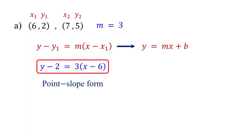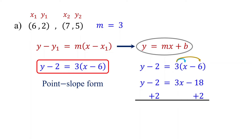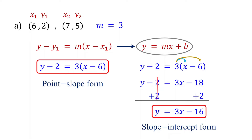To write the equation in slope-intercept form, convert the point-slope form. Start by distributing the 3: 3 times x is 3x, and 3 times negative 6 is negative 18. In slope-intercept form, y should be by itself, so isolate y by adding 2 to both sides. On the left, these cancel leaving y. On the right, negative 18 plus 2 is negative 16. The equation is now in slope-intercept form.